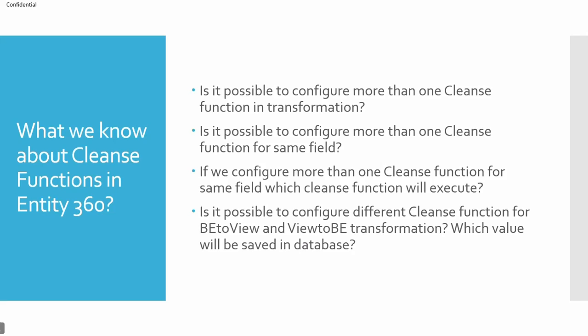If we configure more than one cleanse function for a given field, which cleanse function will execute? In the direct transformation it was one-to-one, yet in the database we have comma-separated values, and on the UI we see uppercase. That means the most recently configured or latest one in the list gets executed and applied. So the sequence is important — if you don't want a particular cleanse function to execute in a given sequence, you have to skip it or not configure those fields in that cleanse function.